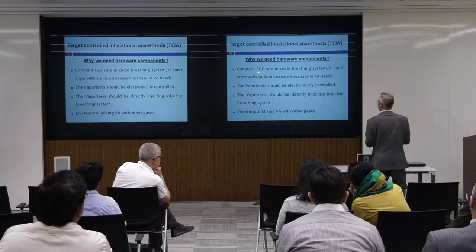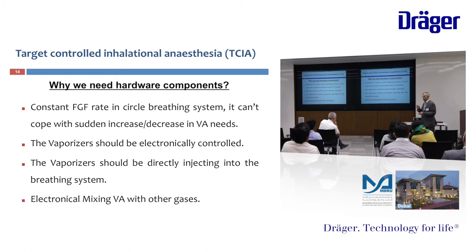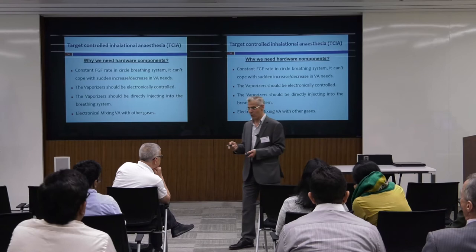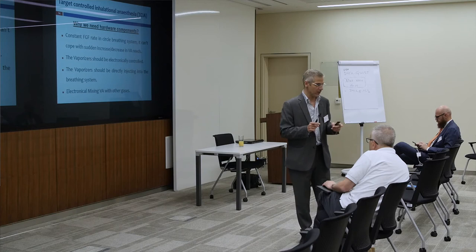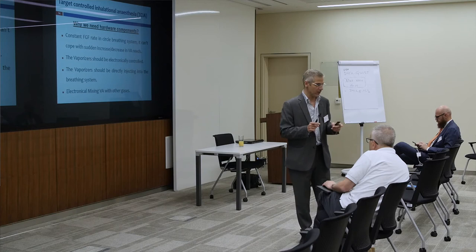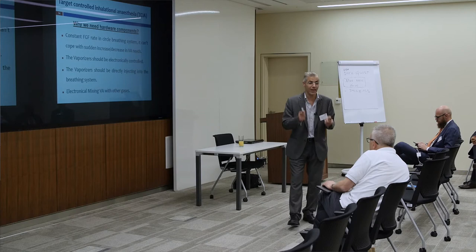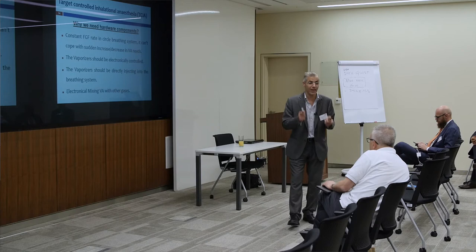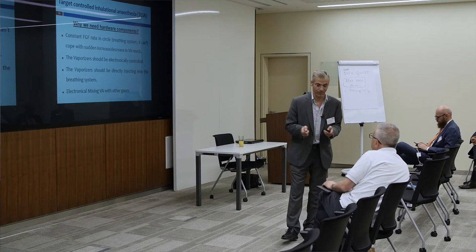Why do we need the hardware component? The conventional fresh gas flow rate and circuit breathing system cannot cope with sudden increases or decreases in volatile anesthetic need. This was a matter of discussion with Dr. Fawaz during the course, and he expressed some negative feedback — we couldn't find the reason. But the advantage of this machine is that it can compensate for any sudden change during the automatic gas control. The vaporizer should be electronically controlled, and because of this, we cannot have target-controlled inhalational anesthesia with any machine having a mechanical type of vaporizer.